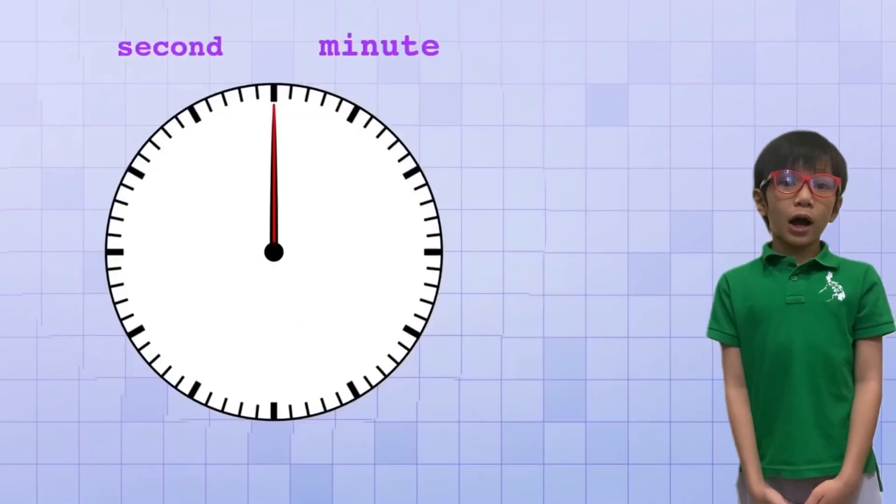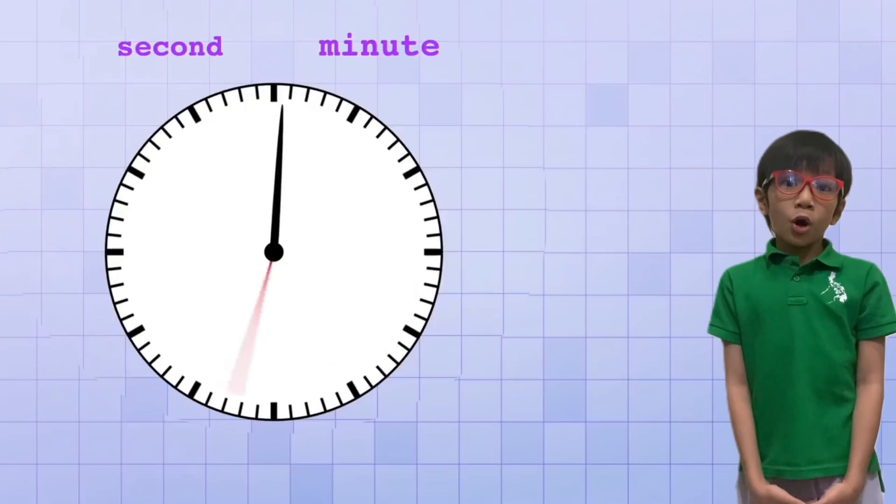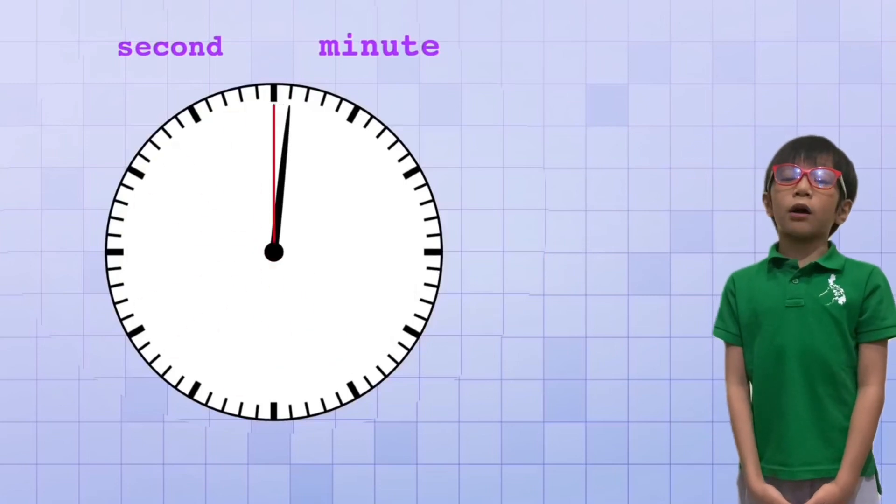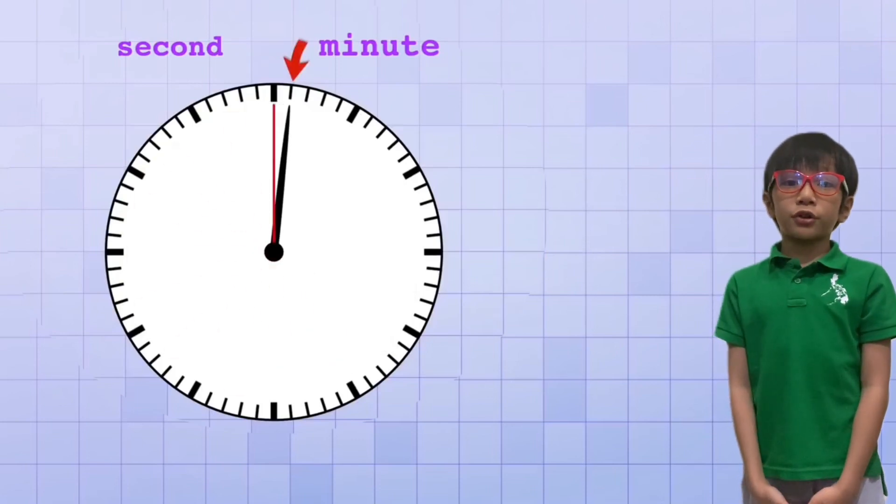Okay, so now we know how the second and minute hand work. When the second hand moves all the way around the clock, the minute hand increases by one.